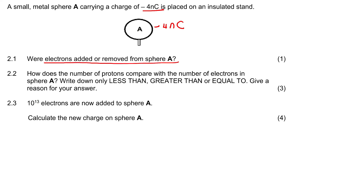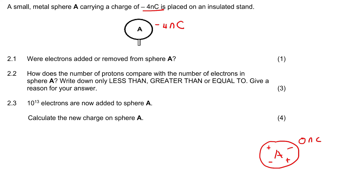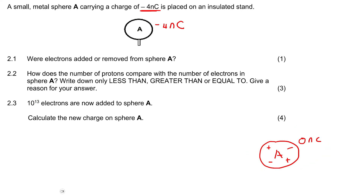Were electrons added or removed? That's a bit of a weird question, but what they mean is: imagine you originally have sphere A and it doesn't have a charge — the positives and negatives are perfectly balanced, so the overall charge is 0. Then they tell us the charge is now negative 4. All things would have a charge of 0 unless we do something to give it a specific charge. So how would you make it more negative — would you add electrons or remove electrons?